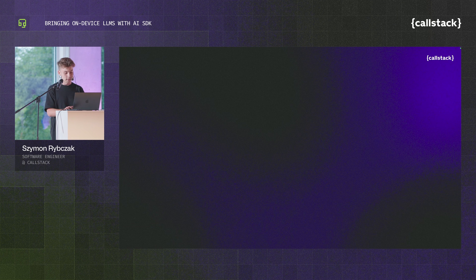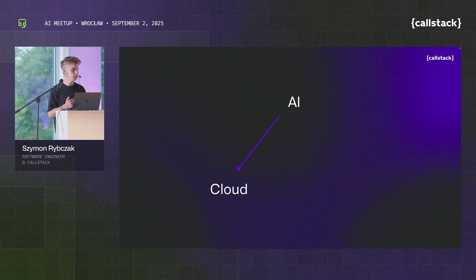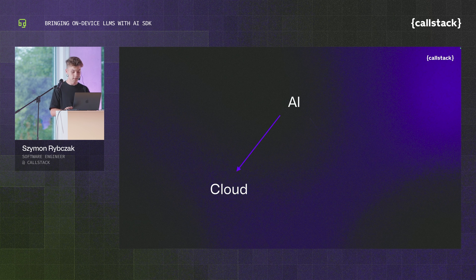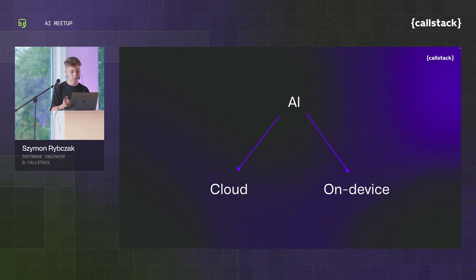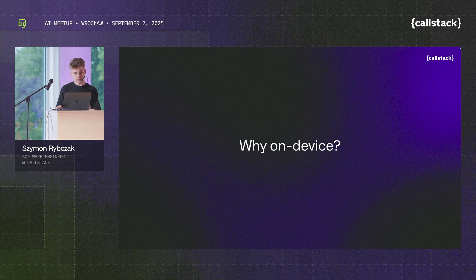If we take a look at AI from the infrastructure point, the first thing that comes to mind is hosting AI in the cloud — gigantic servers powered by very good CPUs and GPUs. But it turns out you can also execute LLMs on-device: we can run Llama on our MacBooks, even on our phones. Siri and the typing models that predict the next word are already AI running on our iPhones.